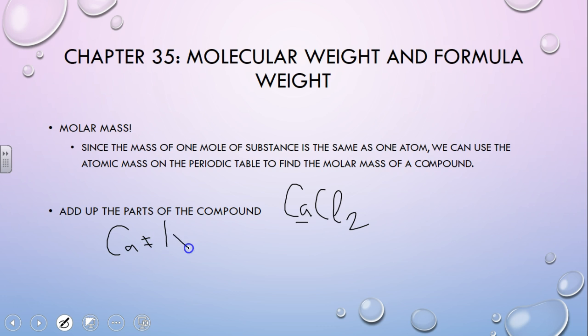Calcium is one times, and we look at the periodic table, and calcium is 40.08. And then we look at chlorine. How many chlorines are there? There's two. And it's 35.45 when you look at the periodic table.